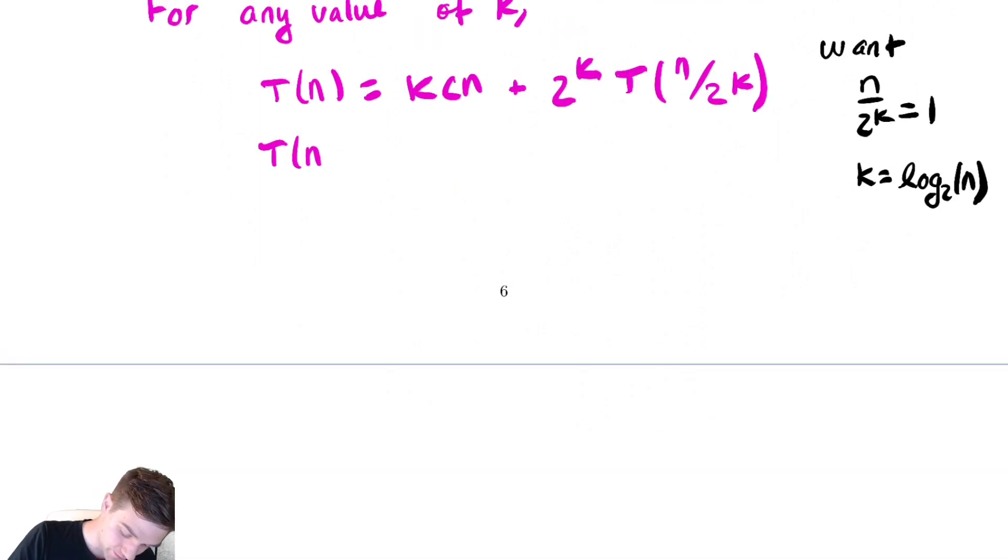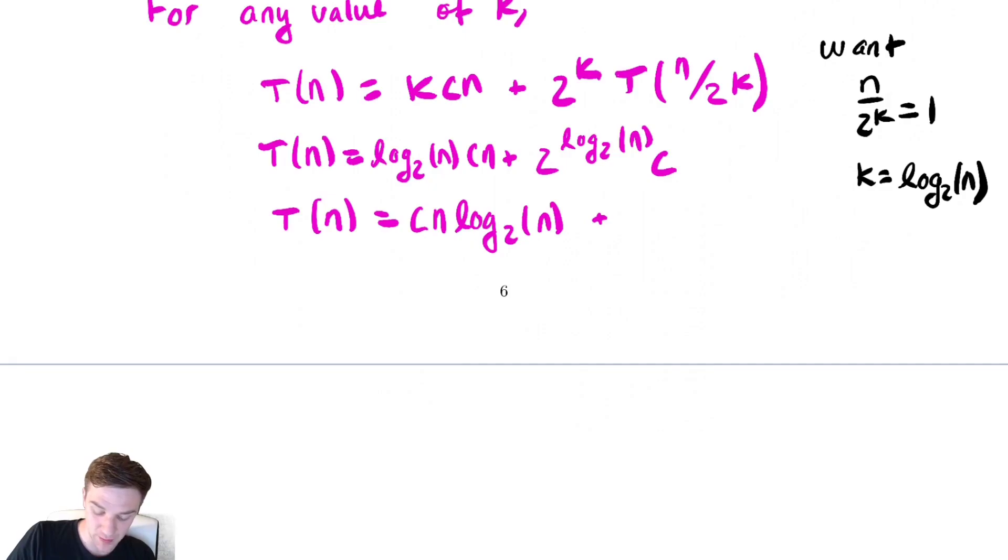So T(n) is equal to k, which is log base two of n times cn plus two to the log base two of n times T(1). T(1) is just c, so let's swap that in really quick. So T(n) equals cn log n plus two to the log base two of n, that's n, so that's a cn there. All of that means that T(n) is in theta of n log n.